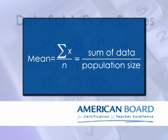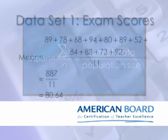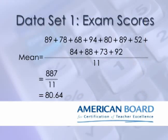By the way, in official statistical speak, the number of values that you have is called the population size. So in this example, divide 887 by the population size of 11. The mean test score is approximately 80.64.